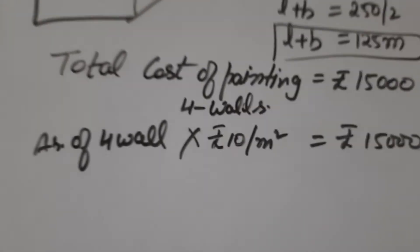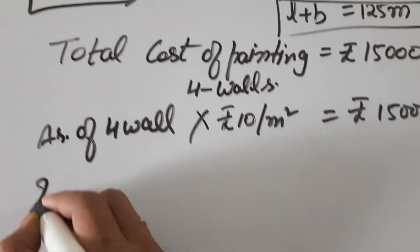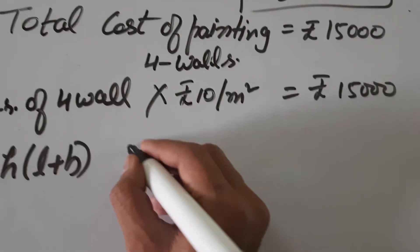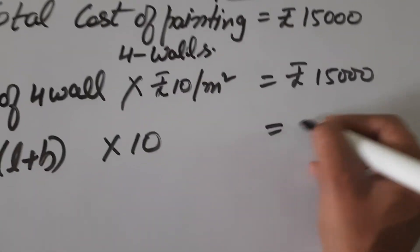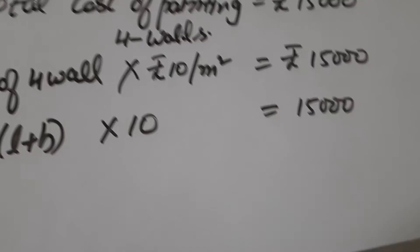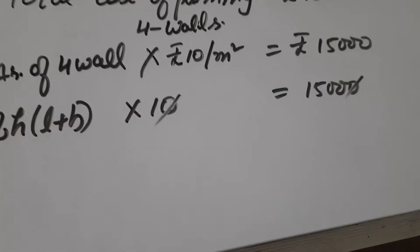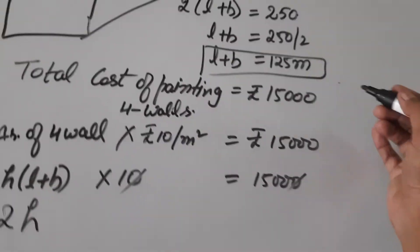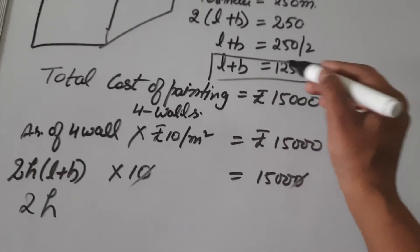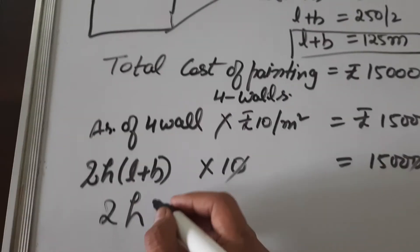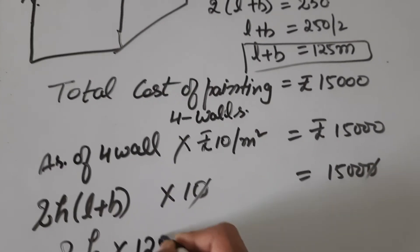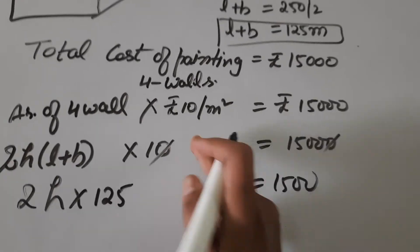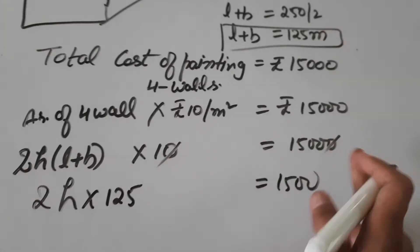The formula for area of 4 walls is 2H into (L plus B). So: 2H into (L plus B) into 10 equals 15,000. We already found L plus B equals 125 meters, so substitute that value. This gives 2H into 125 into 10 equals 15,000. Cancel by direct multiplication: 2 into 125 into 10 equals 2,500, so 2500H equals 15,000.